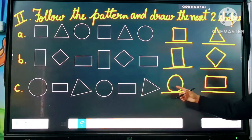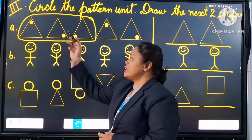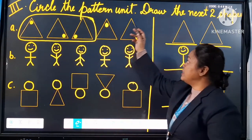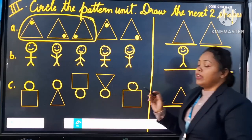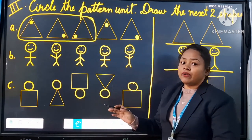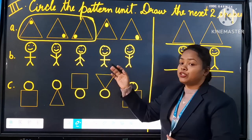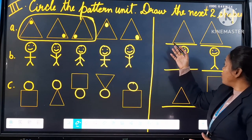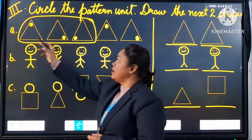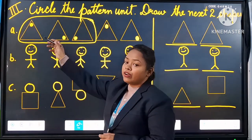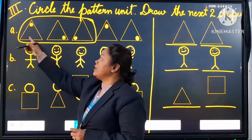Like this you will complete your second exercise. Question number three: circle the pattern unit and draw the next two shapes. In this question you have to circle the pattern unit and then draw the next two shapes. You have to focus on the circle given inside the shapes.